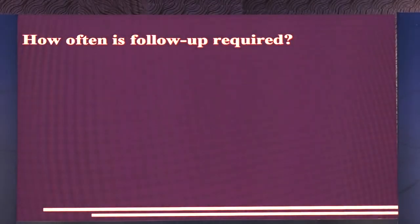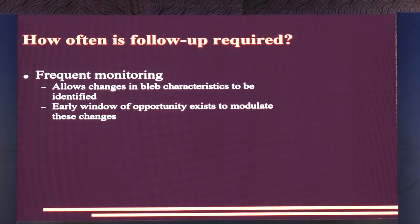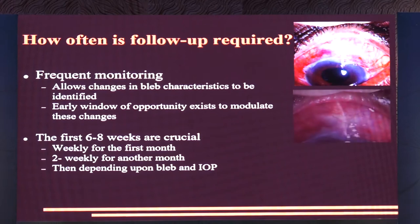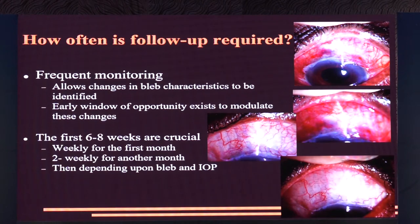The usual post-operative course requires frequent monitoring — it's labor intensive. Don't assume your job is over after the TRAB. Tell the patient to arrange to stay for a couple of weeks, as you need to follow up and manage the bleb in that time. The usual schedule is weekly for the first month, then fortnightly for another month, depending on bleb and IOP. By about four to five weeks, you should have a good bleb.